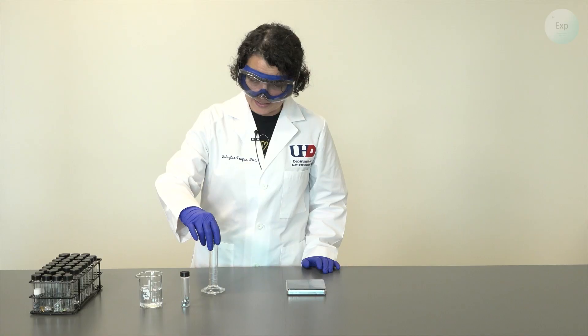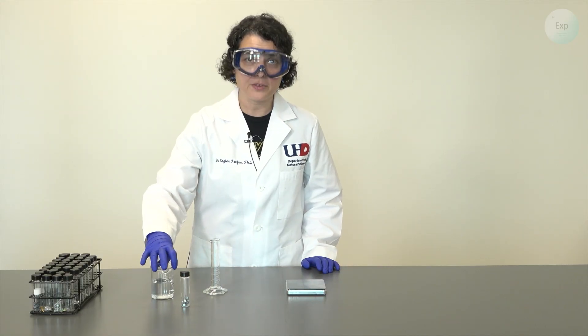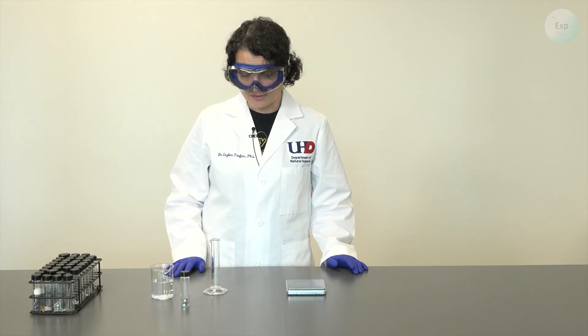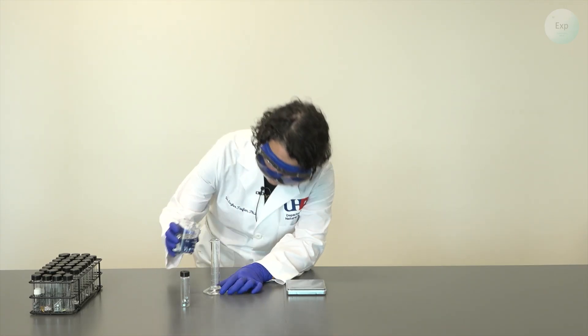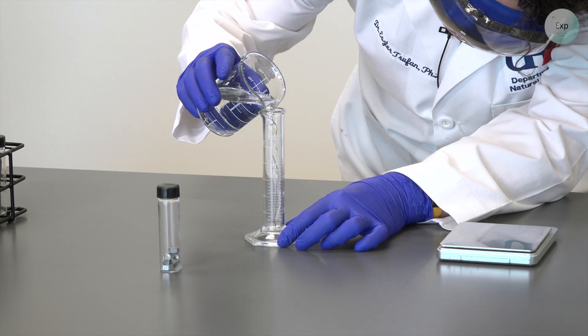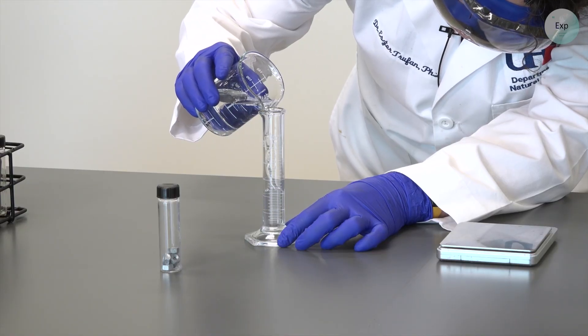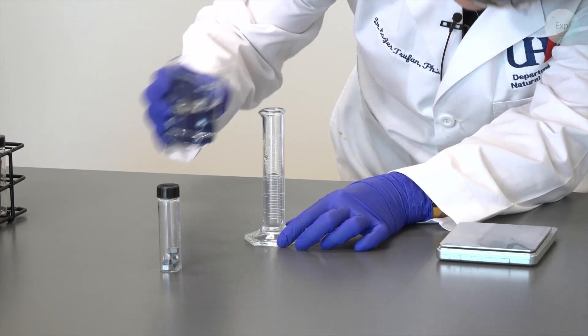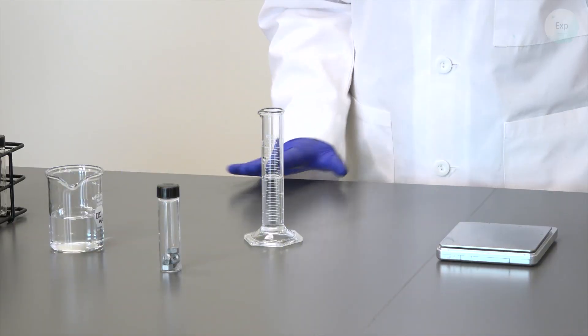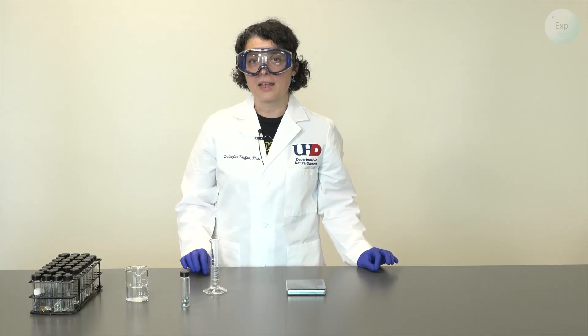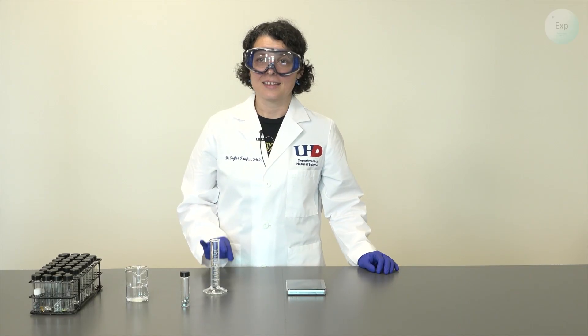The first thing that I'm going to do is pour approximately 15 milliliters of water into my graduated cylinder. This does not have to be exact but rather approximately 15 milliliters. The important part here though we need to record that volume as exact as we can.